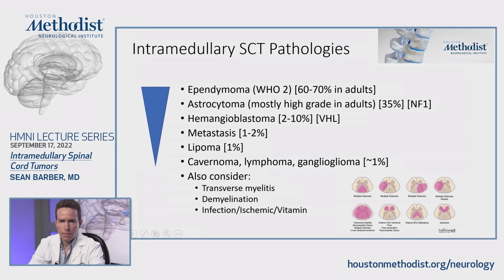Whenever evaluating someone you think has an intramedullary tumor, you should also strongly consider other pathologies that are not tumor — neurological conditions like transverse myelitis, demyelination like multiple sclerosis, and also ischemic pathologies or vitamin deficiency. It's important to rule those out.